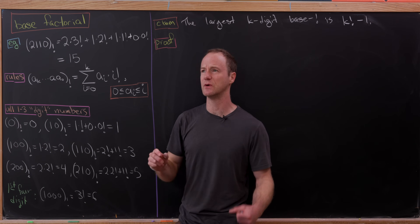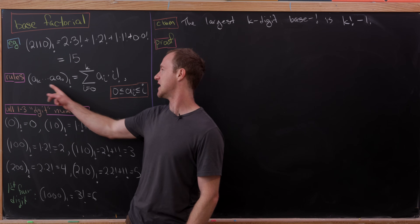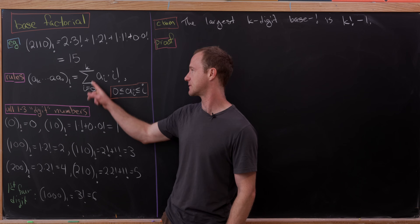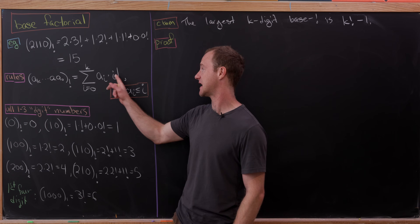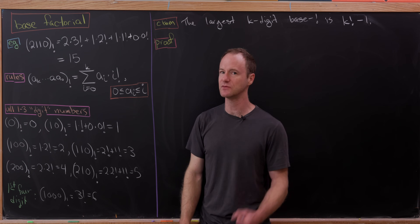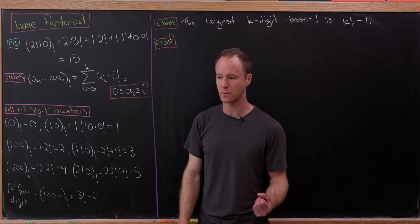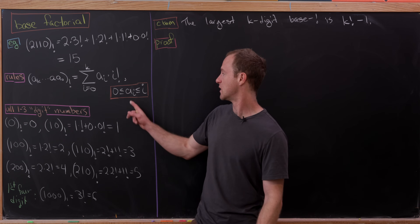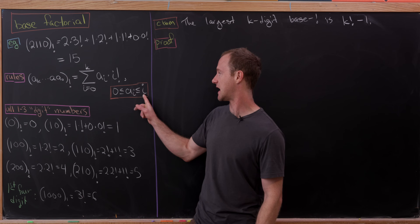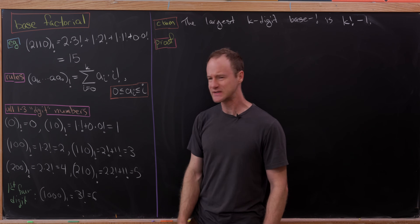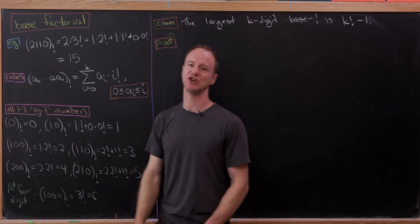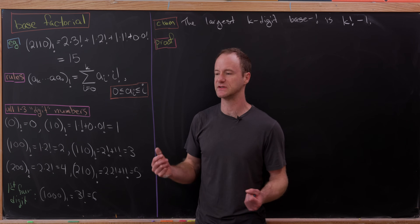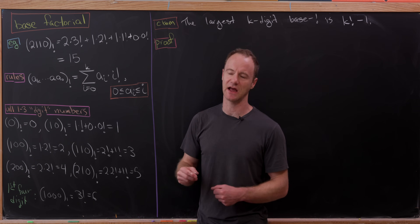To put it in a general package: the number AK, AK-minus-1, down to A1, A0, base factorial, equals the sum as i goes from 0 to K of Ai times i factorial. And there's a rule on the size of the digits: we need Ai to be between 0 and i, inclusive. Notice that means the 0 factorial digit is always 0.